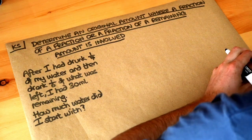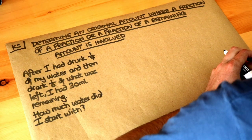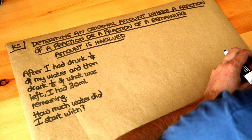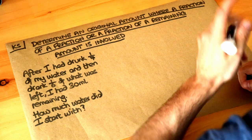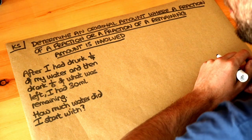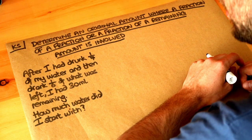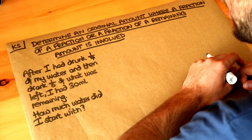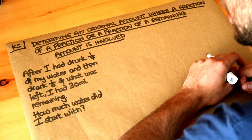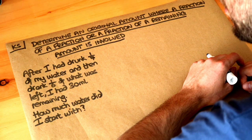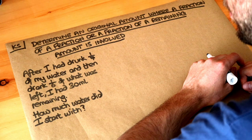Hello and welcome to this Dr Frost video on determining an original amount where a fraction of a fraction, or a fraction of the remaining amount, is involved. After I drank one-seventh of my water and then drank a sixth of what was left, I had 30 millilitres remaining. How much water did I start with?